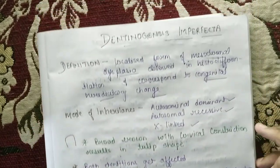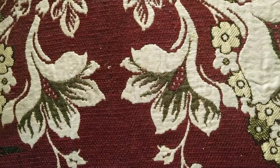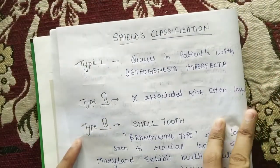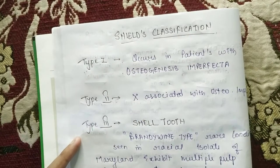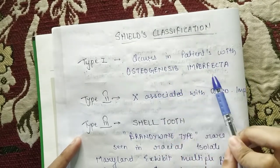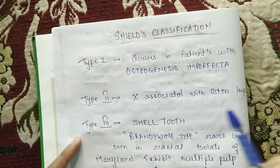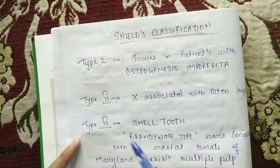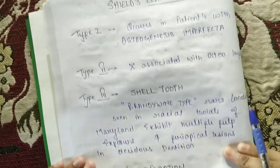Coming to classification — the first is Shields classification. According to Shields classification there are 3 types of dentinogenesis imperfecta. Type 1: patients with osteogenesis imperfecta. Type 2: not associated — the patient does not have osteogenesis imperfecta. Type 3 is shell tooth — it is the Brandywine type, and it is a very rare condition seen in Maryland.